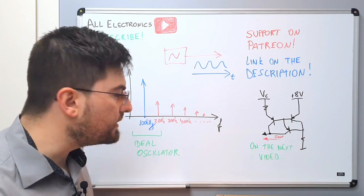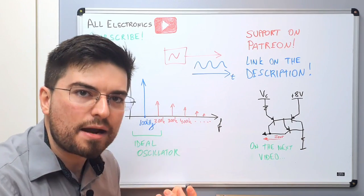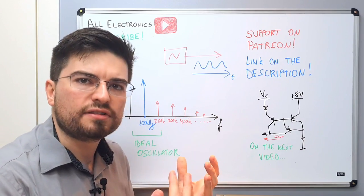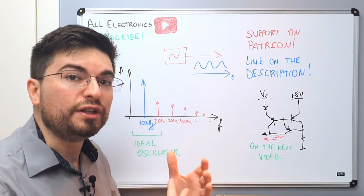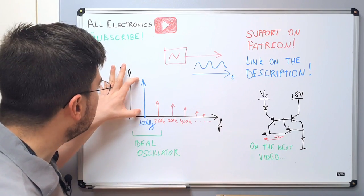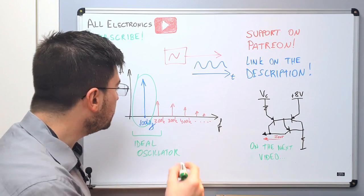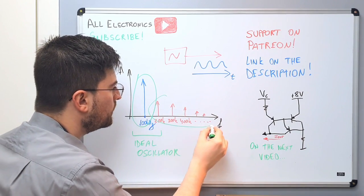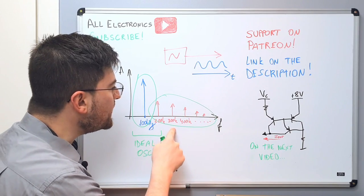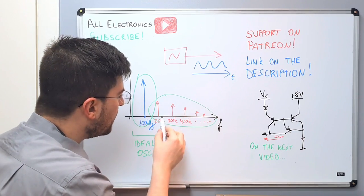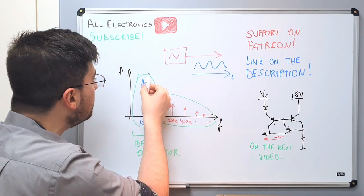As we saw in the non-linearity video, these tones are generated by the non-linear behavior of the circuit. The purity of a signal — how clean a signal is — can be measured with the ratio of the amplitude of the main tone over the amplitude of the other generated tones.